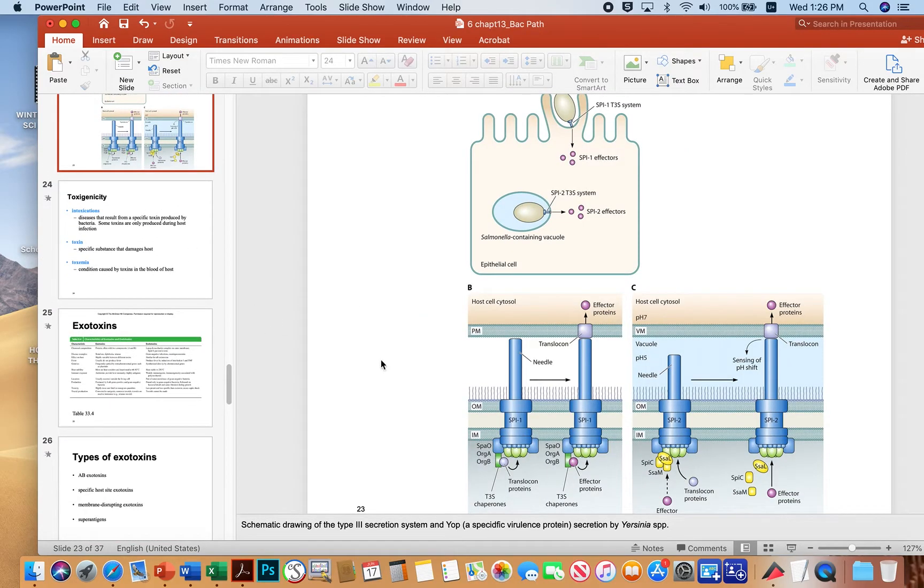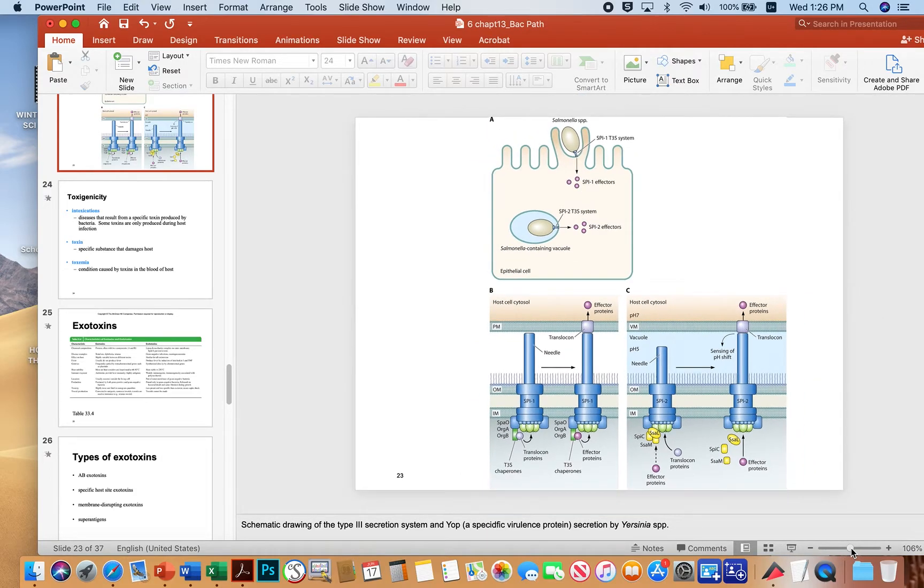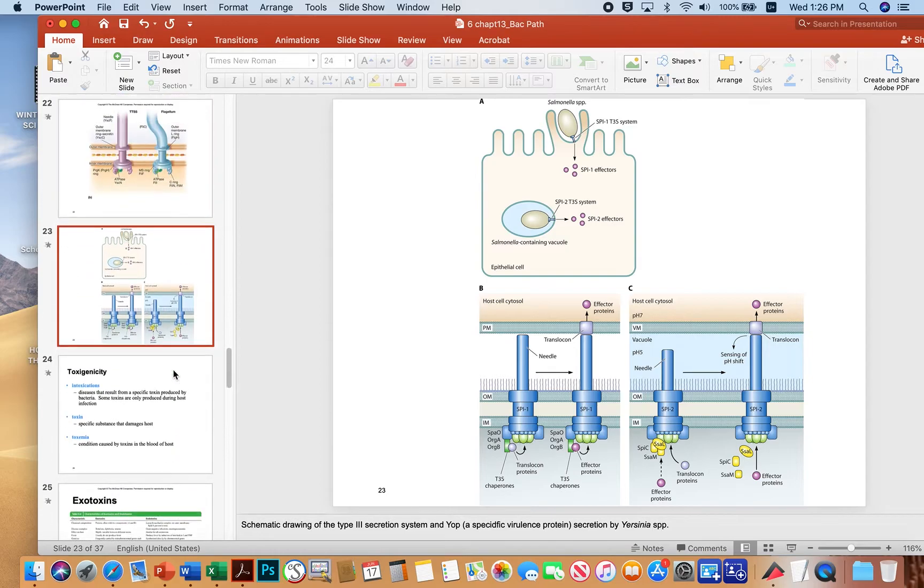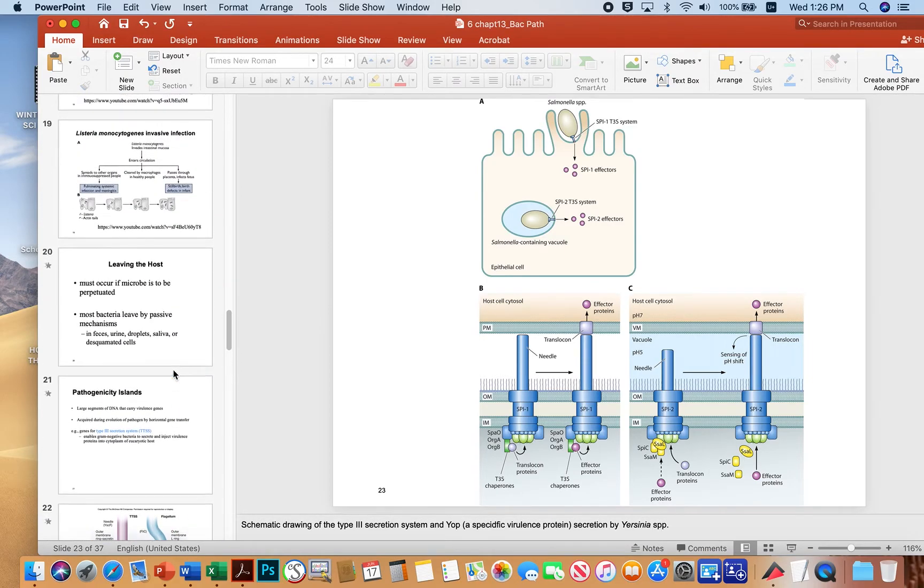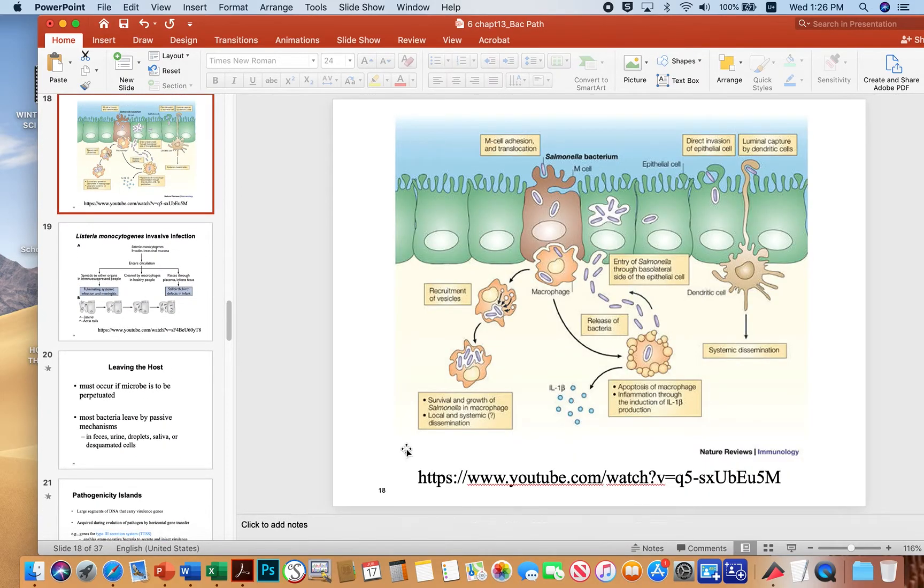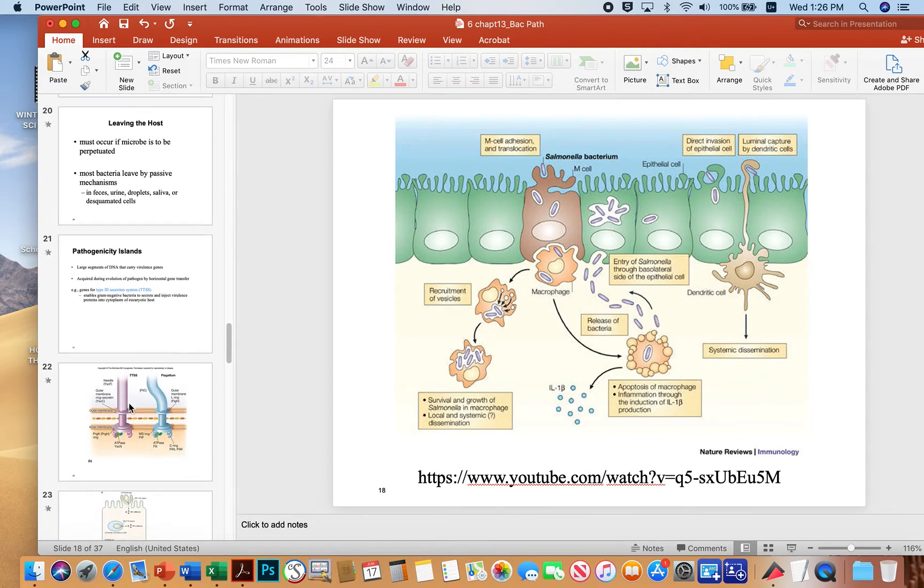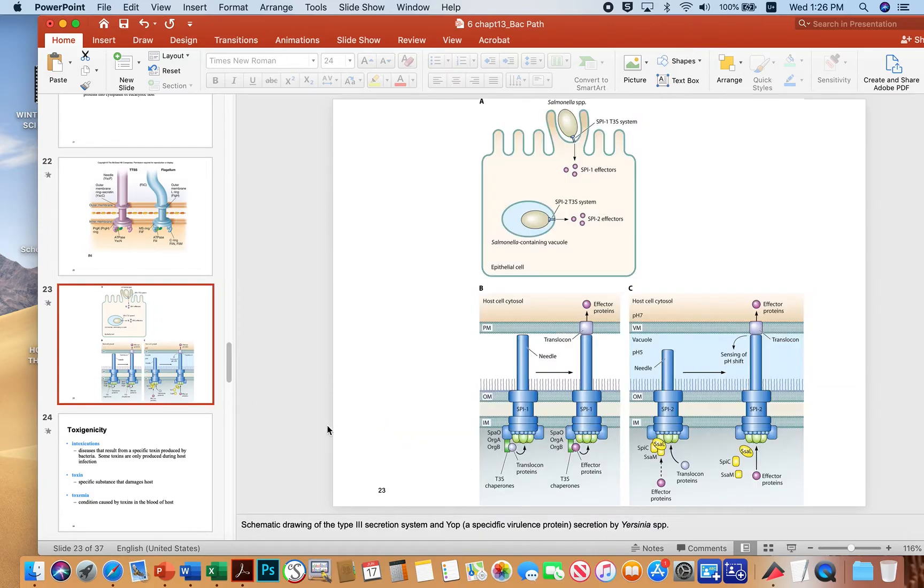So it looks something like this, then, when you look at the type 3 systems of salmonella. And again, go back to this YouTube video, and you can see an animation of this event that I'm showing you here. Basically the salmonella use their type 3 secretion system, pictured here, and the type 3 secretion system is encoded by something called SPI, which is Salmonella Pathogenicity Island.